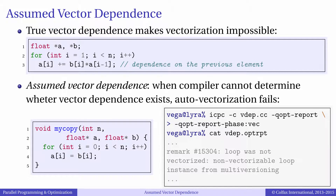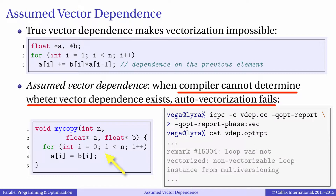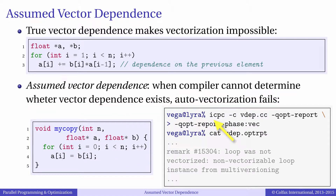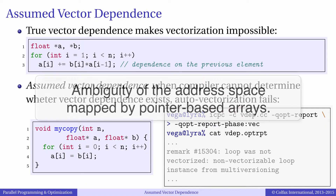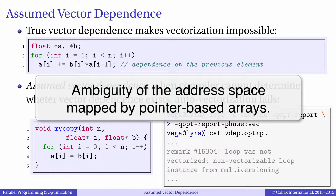However, there are cases where it is impossible to determine at compilation time whether vector dependence exists or not. A common scenario is when the compiler creates object files separately and independently for different source code files. In this case, pointers passed from one file as function arguments implemented in the other file are not known at compilation time and therefore cannot be checked.